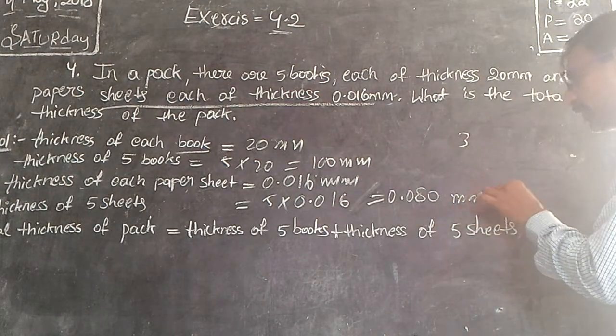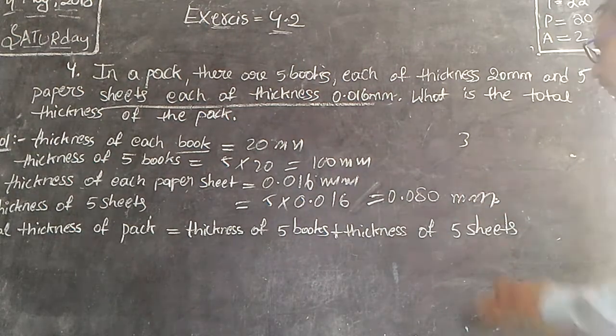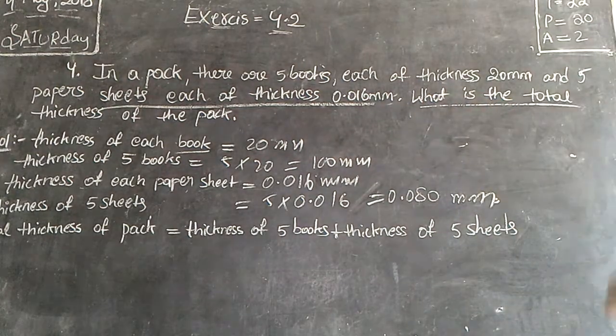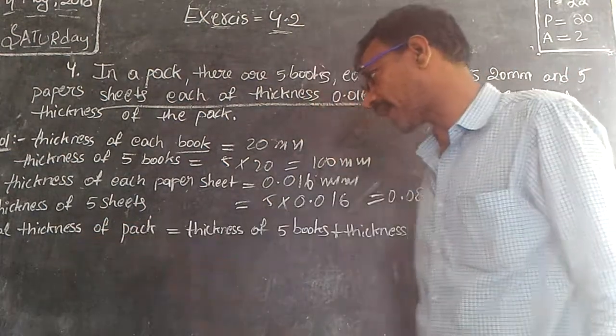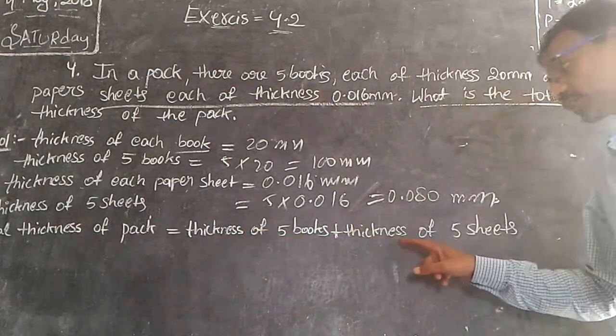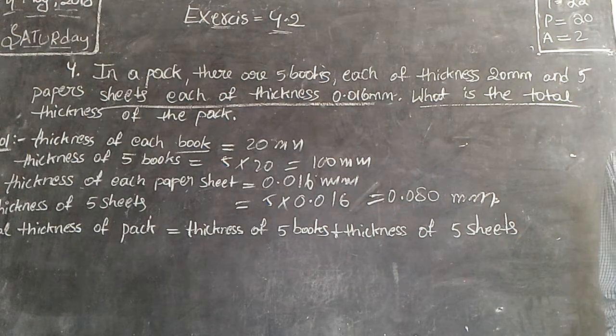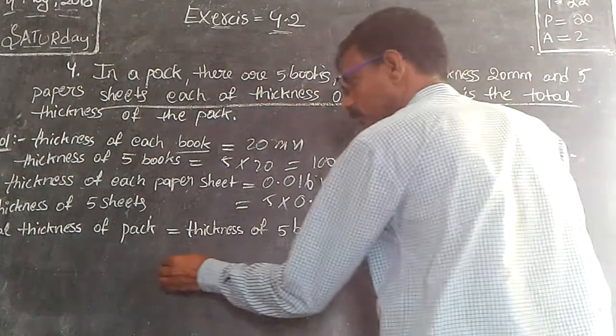What is the total thickness of the pack? The total thickness of the pack is the thickness of 5 books plus the thickness of 5 sheets.